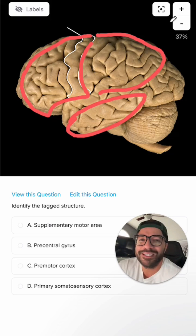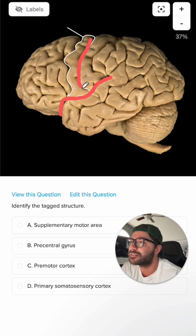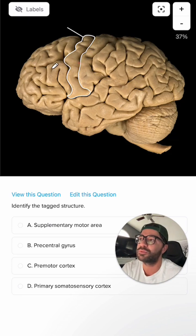Now there are a couple of key sulci and fissures which we can use to landmark where we are. This is the lateral fissure. This is our central sulcus. You can see it doesn't fully extend all the way down to our lateral fissure. The central sulcus is an important landmark to distinguish the boundary between the frontal lobe and the parietal lobe.